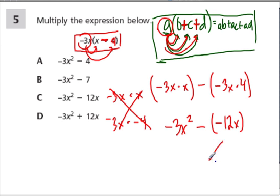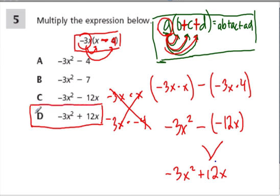Now, a friendlier way of writing this would be negative 3x squared plus 12x, because we're subtracting a negative, same as addition. So here, in fact, we have D: negative 3x squared plus 12x.